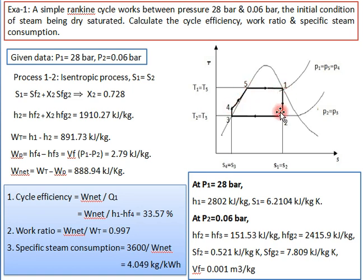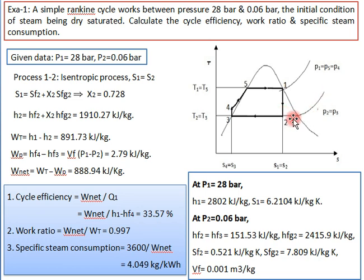These 4 components are located on the TS diagram. Two pressures are given: 28 bar is P1, which is our boiler pressure, and 0.06 bar is P2, which is our condenser pressure.